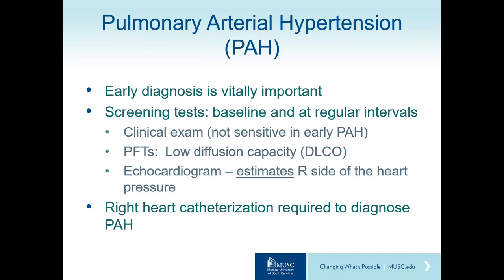Screening tests for pulmonary arterial hypertension (PAH) include physical examination, though it is not very sensitive for early PAH. The diffusion capacity on pulmonary function testing can sometimes be very low in patients with PAH. The echocardiogram can estimate right-sided heart pressures, which would be elevated in pulmonary arterial hypertension. If any of these suggest PAH, a right-sided heart catheterization is required to confirm the diagnosis.